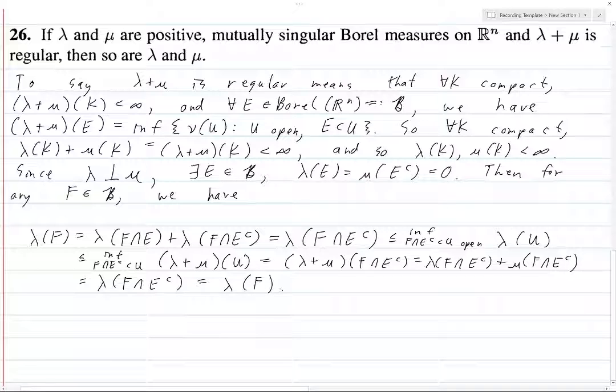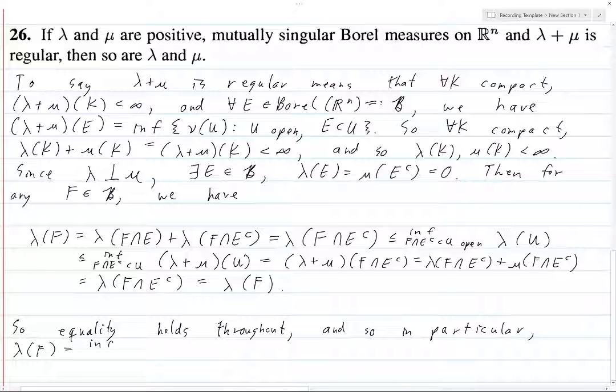And so this is one of those neat arguments, I really like these kinds of arguments where you have a bunch of inequalities and stuff, but then you end up with what you started with. And so equality holds throughout. And so in particular, what do we have? In particular λ(F) is equal to the infimum over all F ∩ E^c contained in U open of λ(U).